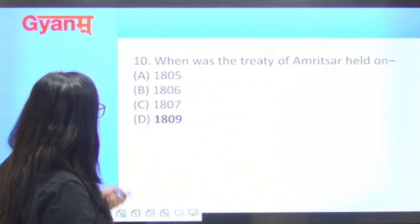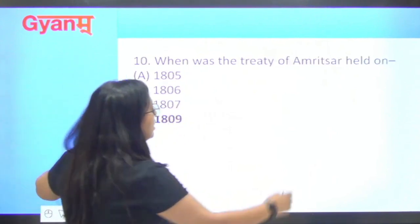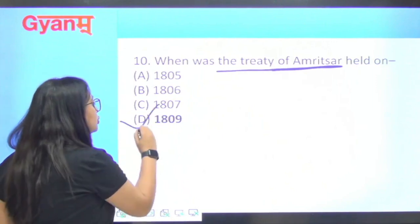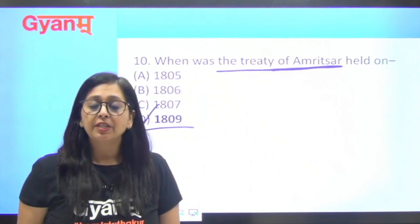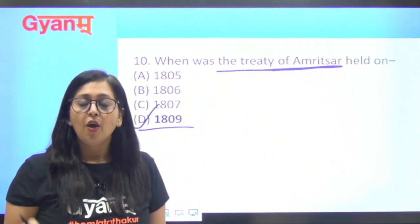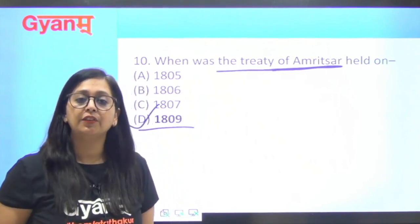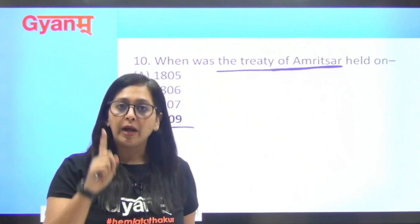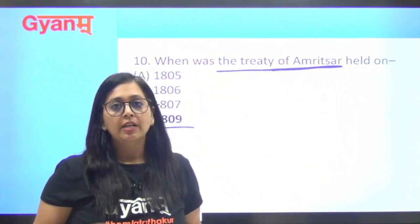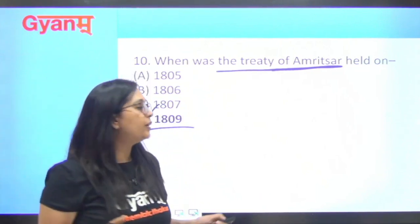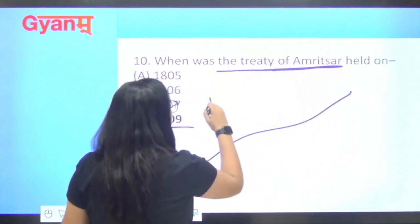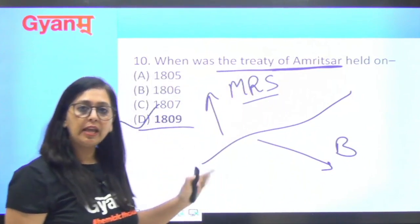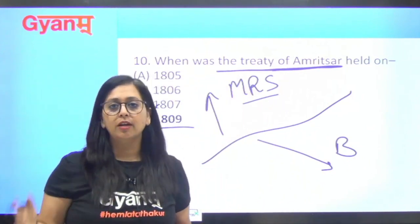Next question: when was the Treaty of Amritsar held? The Treaty of Amritsar was signed in 1809, between Maharaja Ranjit Singh and the British, with Metcalfe representing the British side. The purpose of this treaty was to establish the Sutlej river as the boundary — the Lahore side beyond the Sutlej would remain Maharaja Ranjit Singh's territory, while this side would be British territory.